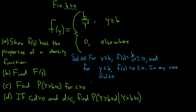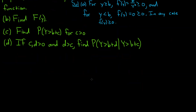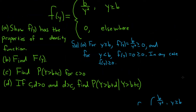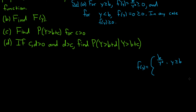The second condition is that when we integrate from negative infinity to infinity, we should get one. I'll scroll down and rewrite our function: f of y equals b over y squared for y greater than or equal to b, and zero elsewhere.